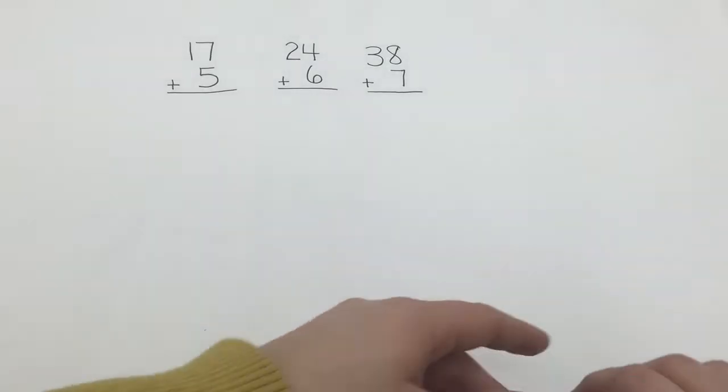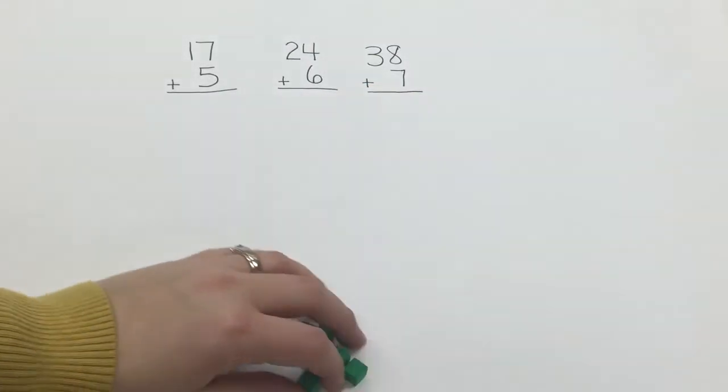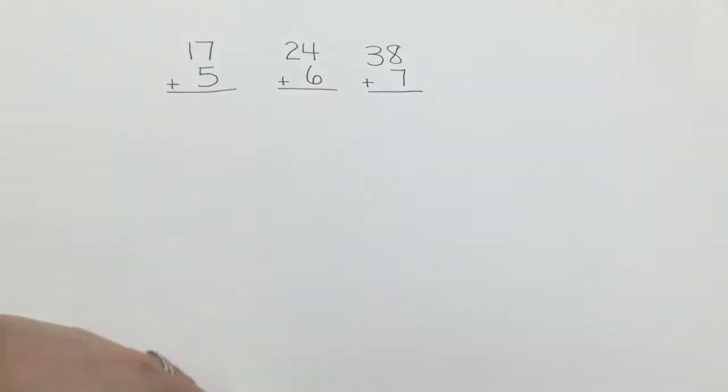Another tool that you can use are the place value blocks. Another tool you can use if you don't have any of these is you can take just popsicle sticks and beans and those can be your 10s and 1s. You can get pretty creative.